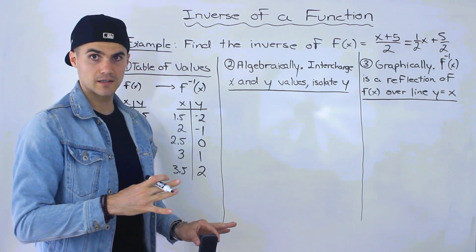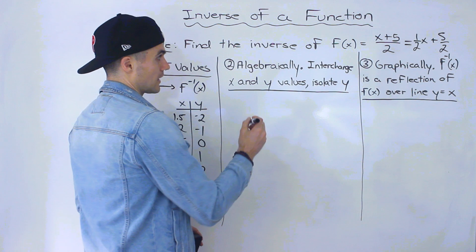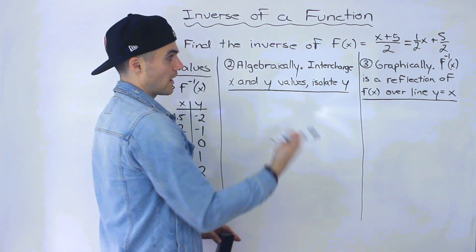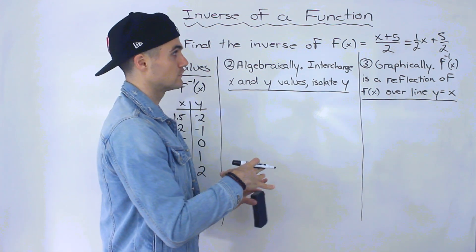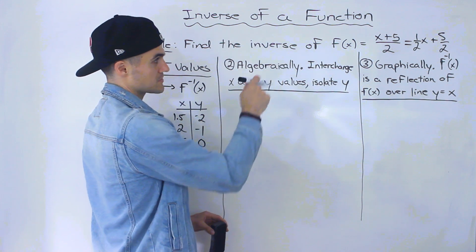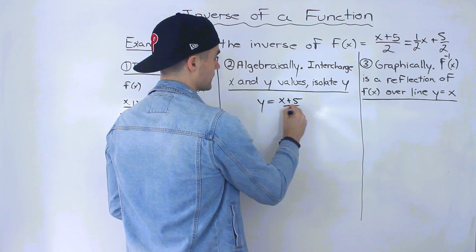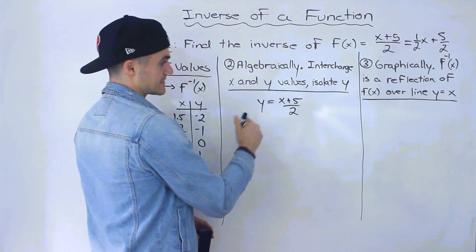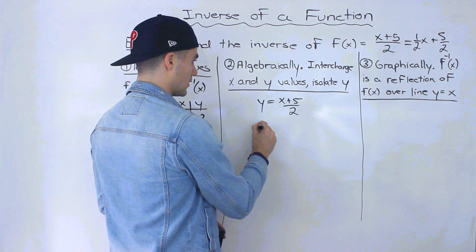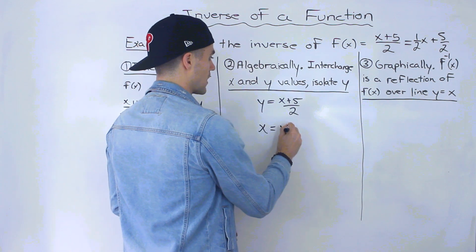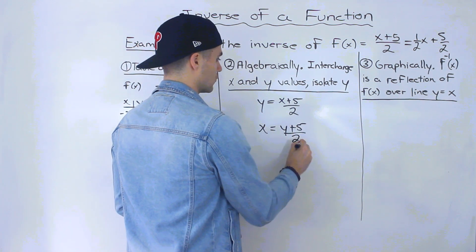Now if you were to do it algebraically, we have to interchange the x and y values and then isolate for y. So f of x equals x plus 5 over 2. Let's rewrite that as y equals x plus 5 over 2. And let's interchange the x and y. So we'll have x equals y plus 5 over 2.